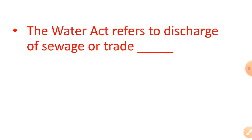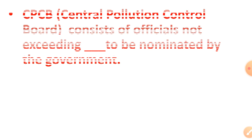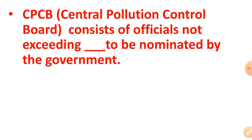The Water Act refers to discharge of sewage or trade dash — the right answer is effluents. The Central Pollution Control Board consists of officials not exceeding dash to be nominated by the government — the right answer is 5.